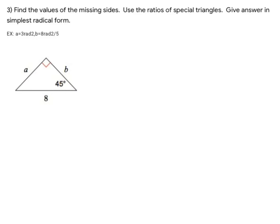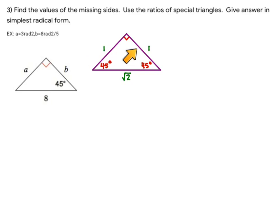Because the two 45-degree angles are congruent, this is an isosceles triangle, which means the two legs are congruent to each other. We need to remember the parent 45-45-90 triangle. I'm going to draw another 45-45-90 triangle in the same orientation and fill in the parent values: 1, 1, and √2. If one leg is 1, the other leg is also 1 because those are the congruent sides. When we apply the Pythagorean theorem, 1 squared plus 1 squared equals X squared gives us √2 for the hypotenuse.